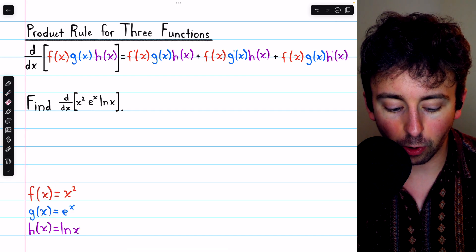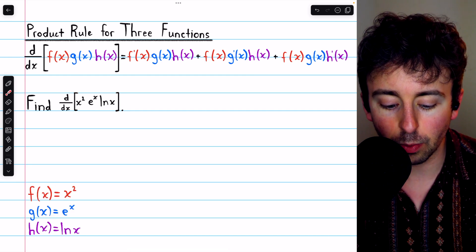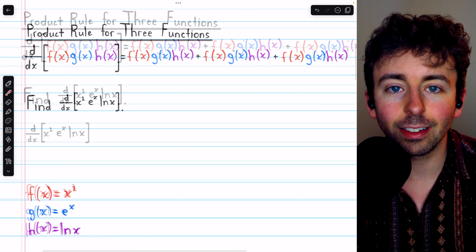Now in this example, let's call our function f, x squared, g will be e to the x, and h will be ln x. And with all that, I think we are ready to calculate the derivative.